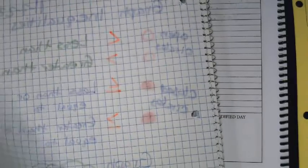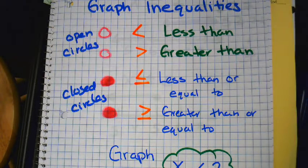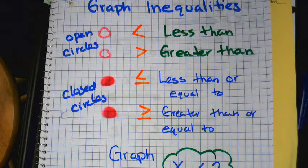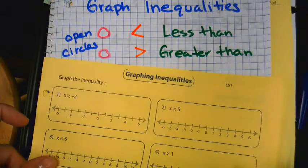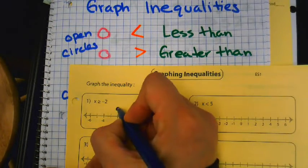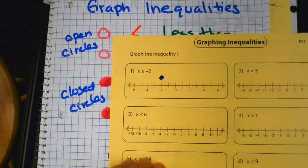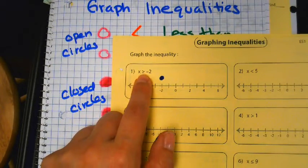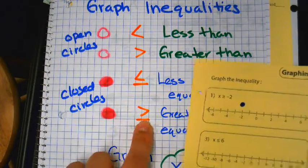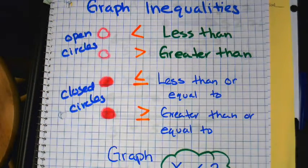My suggestion would be to have these notes so you know: open or closed circle. It should be fairly easy. When you create number lines, don't put zero in the middle — put your number. So number one: open or closed circle? Closed — closed on the negative two. Find negative two, put a closed circle. That's your first job. You can look at your chart to figure out if it's closed or open.